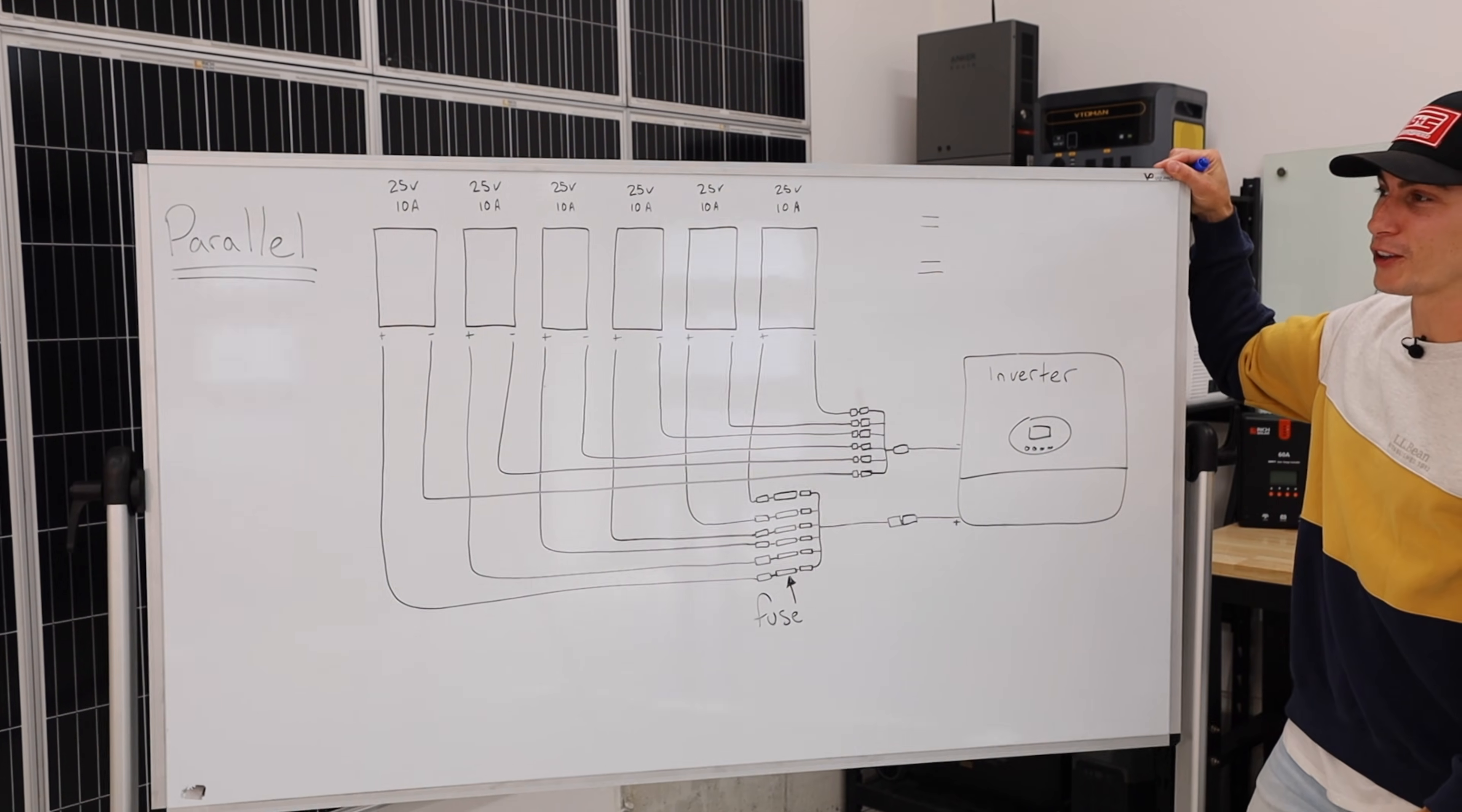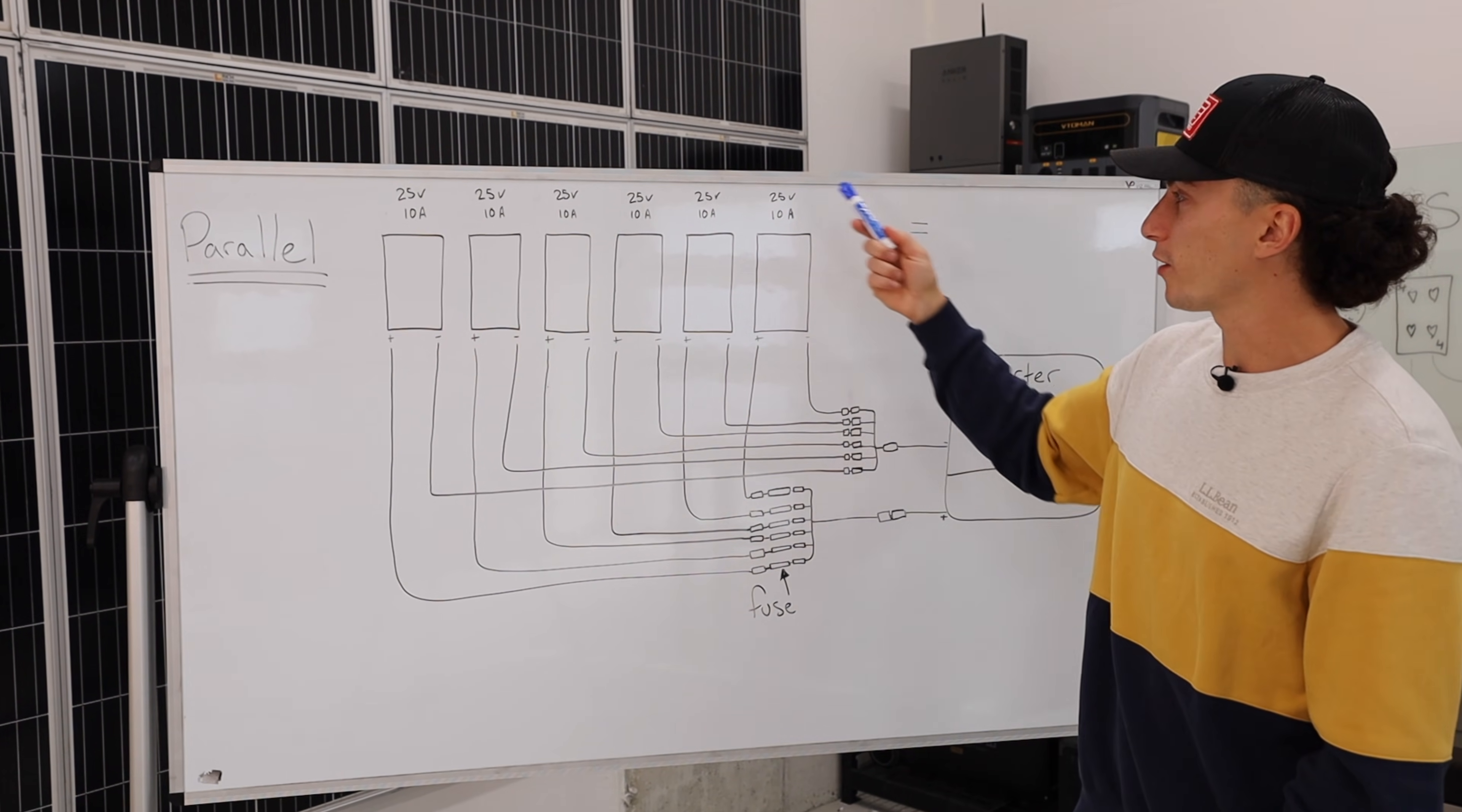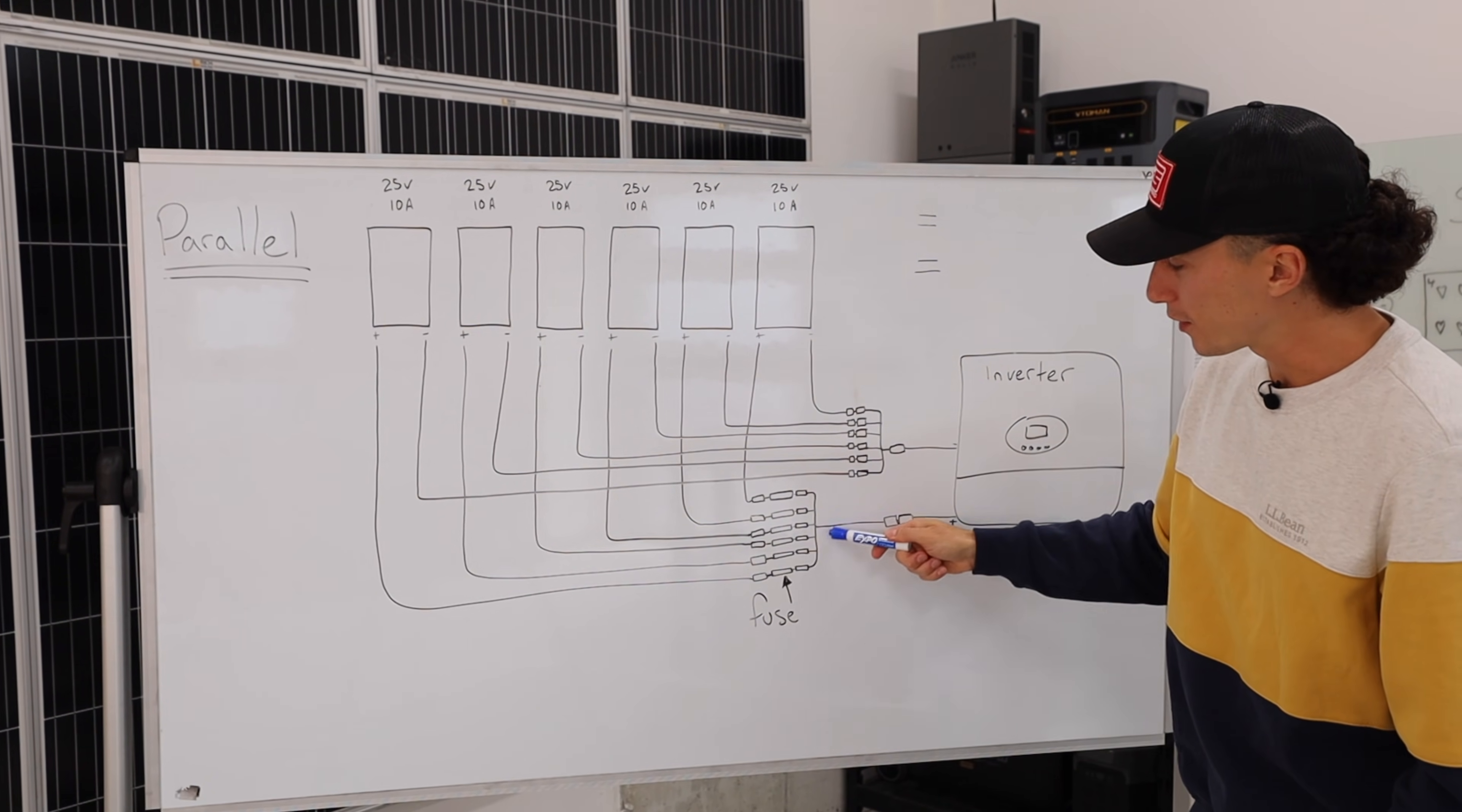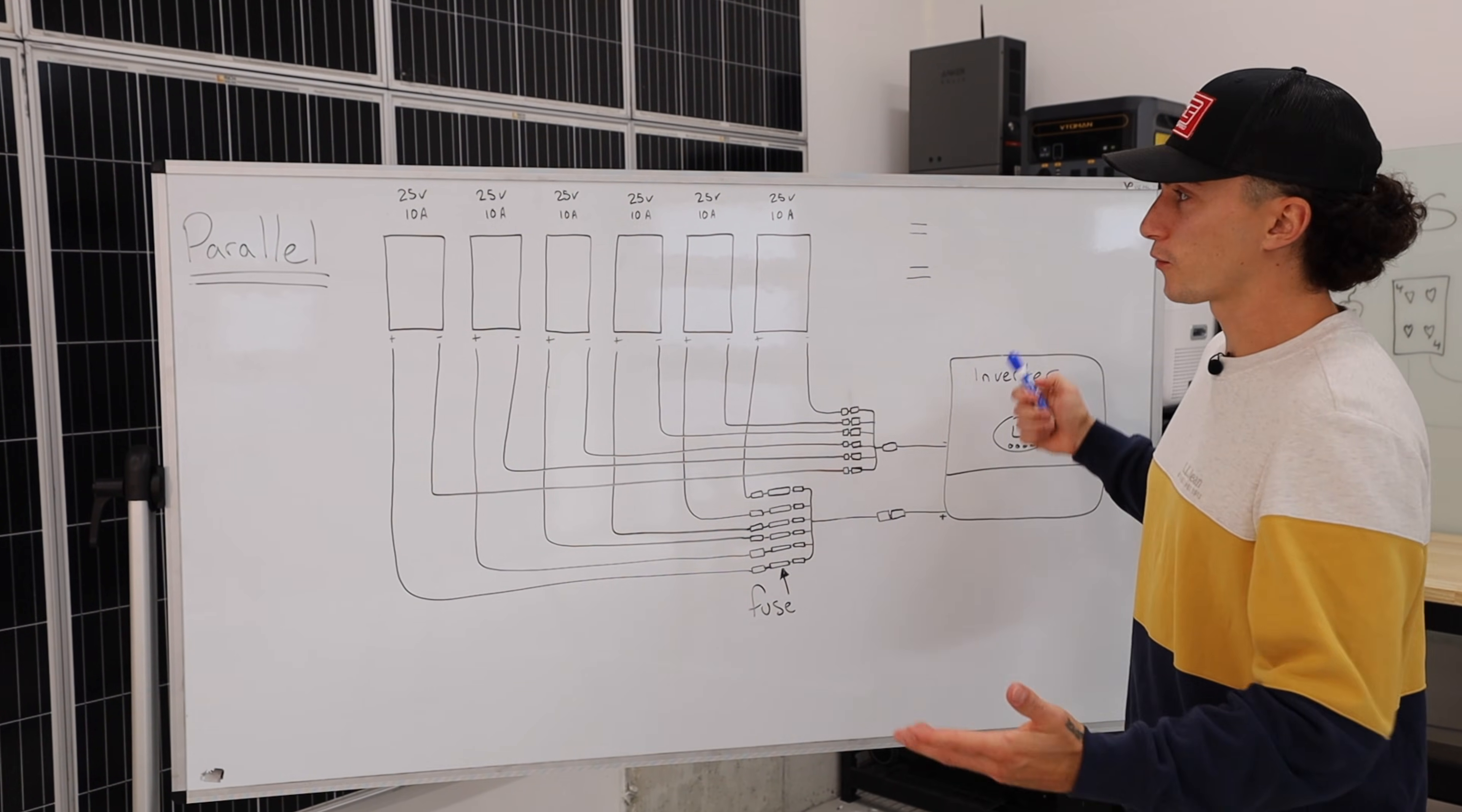When we get into parallel though, it gets slightly more complicated. We're using the same six 200-watt panels, 25 volts and 10 amps, but all the positives come down and combine right here, and all the negatives come down and combine right here.